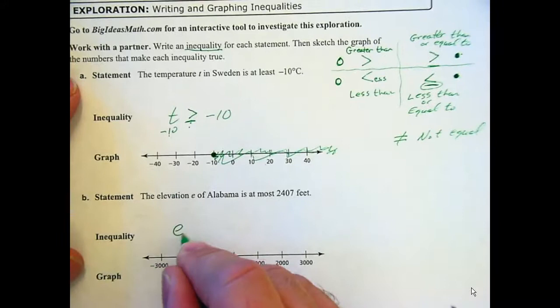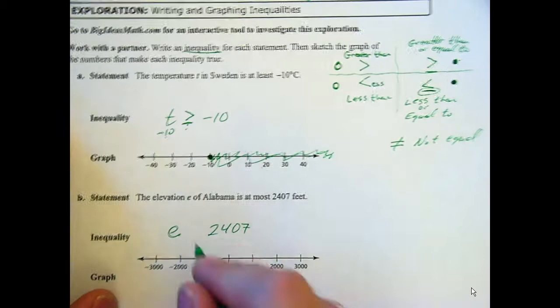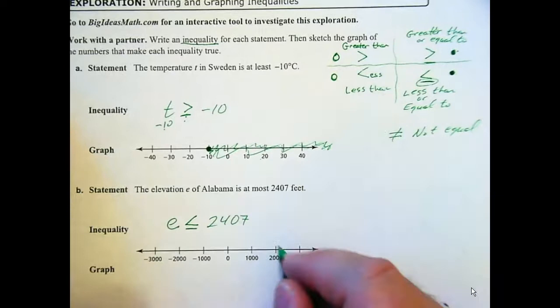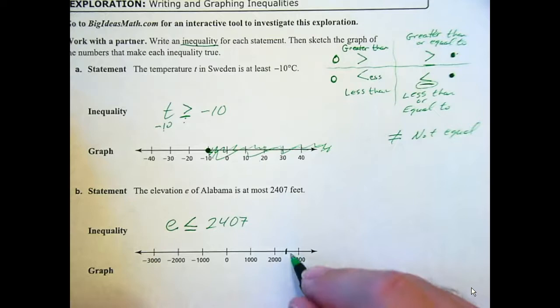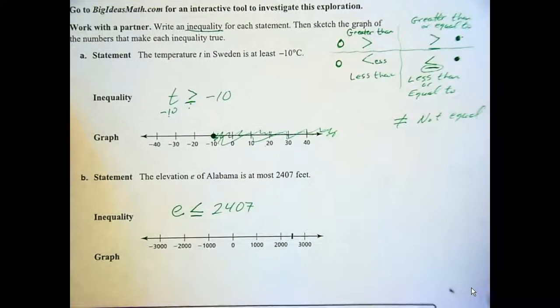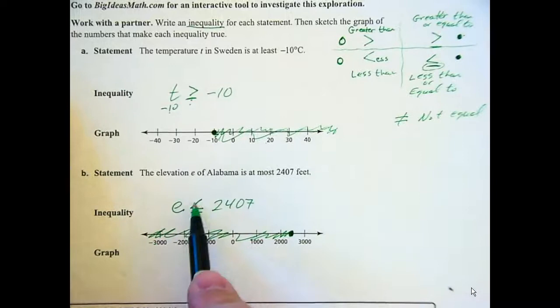Okay? See, the elevation of Alabama, which is E, is at most 2407. That's the most it could be. Could it be 2407? Yeah. Yeah, it could be 2407. Could it be 2408? No. So it has to be less than or equal to. So we go to about where 2407 would be, which is kind of in between 2,000 and 3,000, right in there. Well, it's hard to see exactly where, so we're going to estimate. About right there. Is that an open or closed circle? Which way are we shading, right or left? Left. Left.